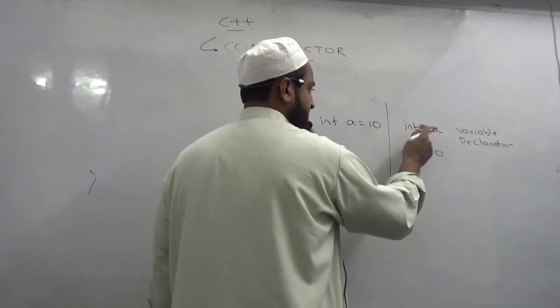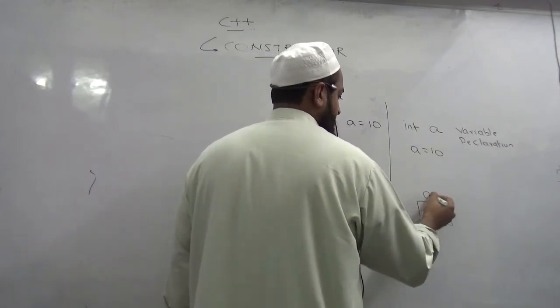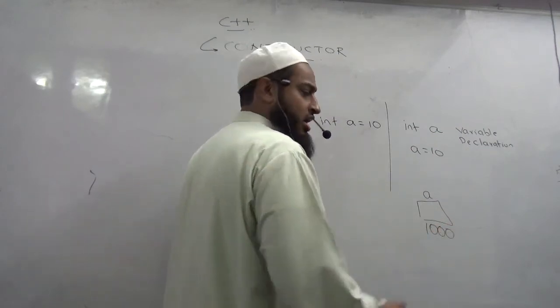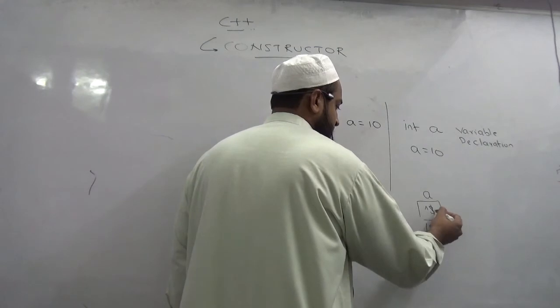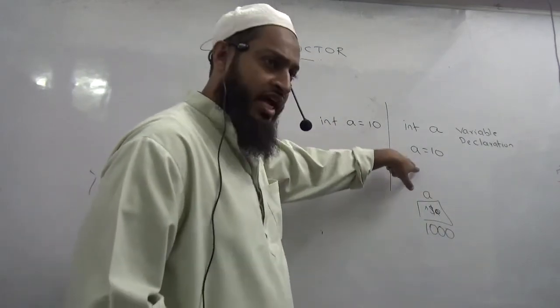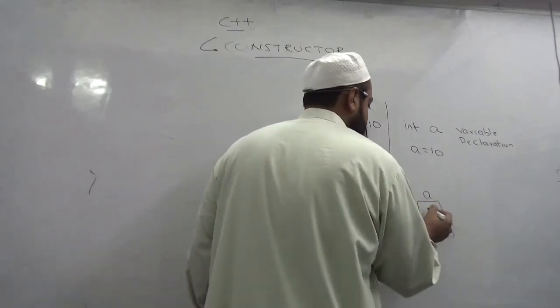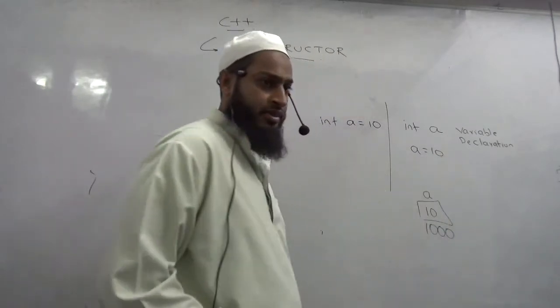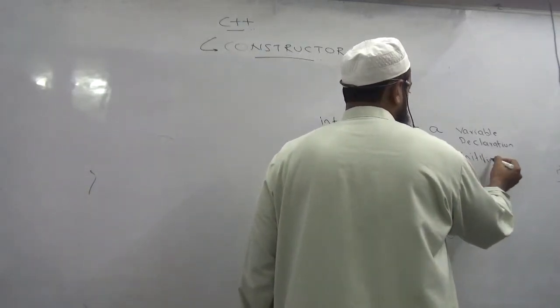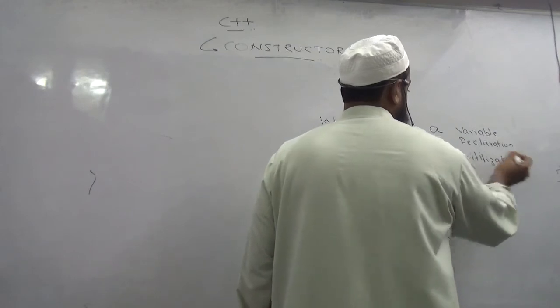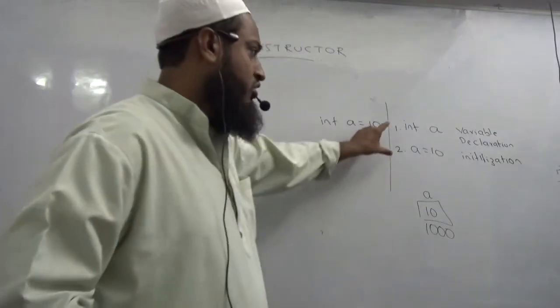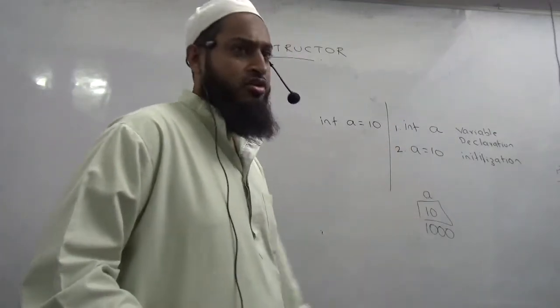So when this variable is declared, integer a, I have a variable called a which has some memory allotted to it. Let's say 1000 memory address. But the value of this variable is kachra. Then when I write a equals to 10, the kachra is removed and it has a sensible value of 10. This is called initialization. Line number one is declaration. Line number two is initialization. So it takes me two lines to put a sensible value in the variable.